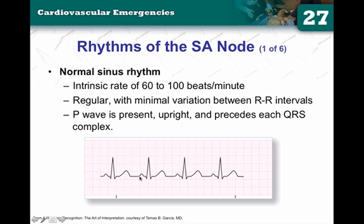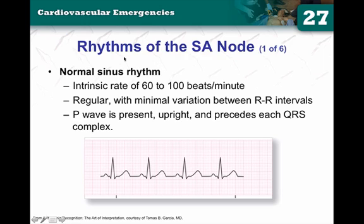We have to make sure there's a P wave before every QRS complex, that the R-to-R intervals walk out, that our PRI is between 0.12 and 0.20, and that our QRS complex is less than 0.12 seconds in width. We need a regular rhythm with minimal variation between R-to-R intervals, and the P wave must be present, upright, and precede each QRS complex. All that has to be in play in order to call the rhythm a normal sinus rhythm.